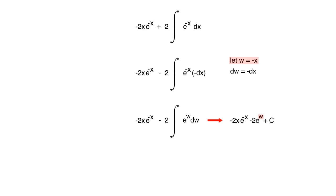So this means our final answer will be negative 2x e to the negative x minus 2 times e to the negative x plus C. Final answer.